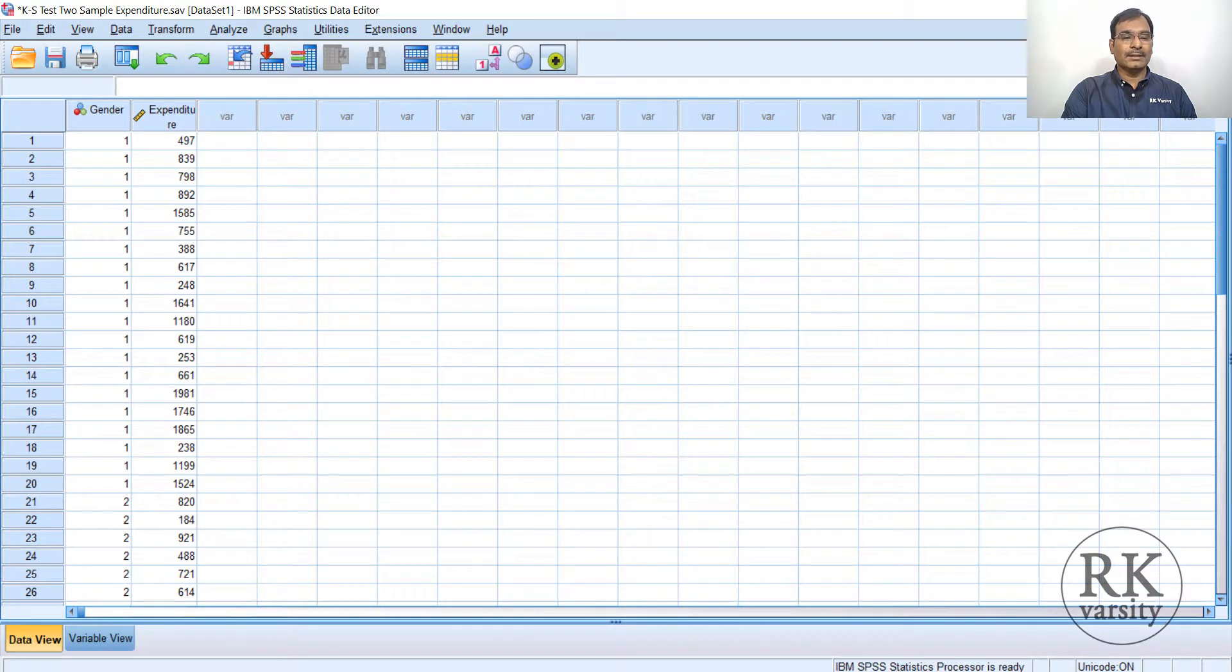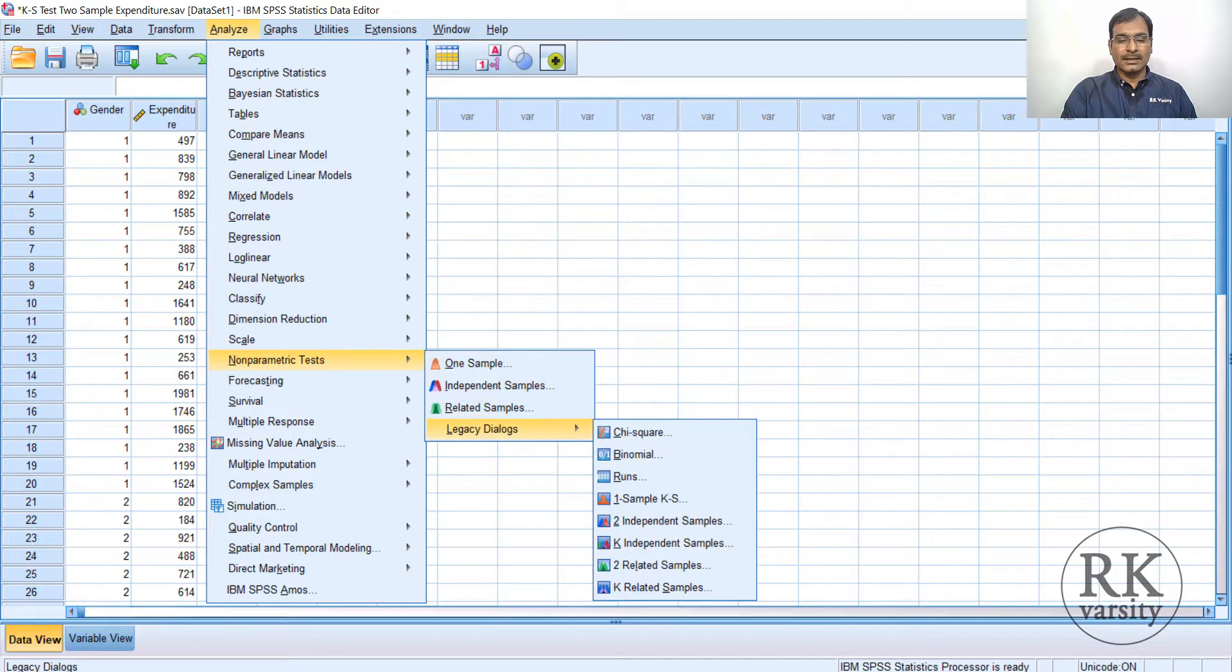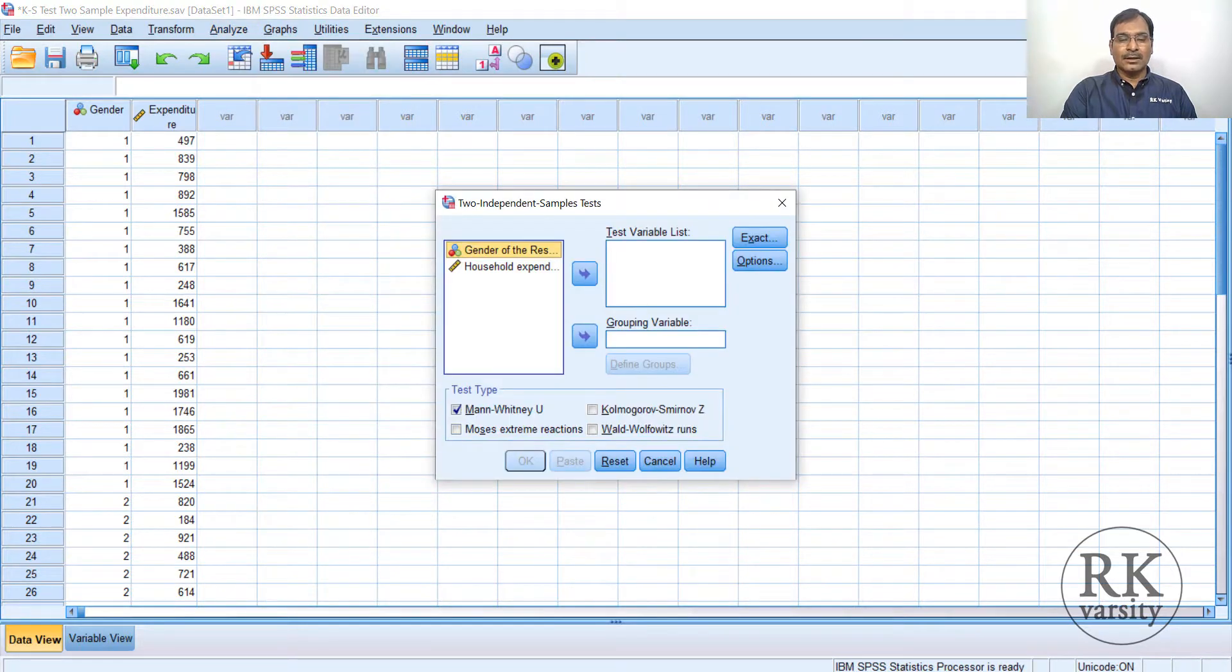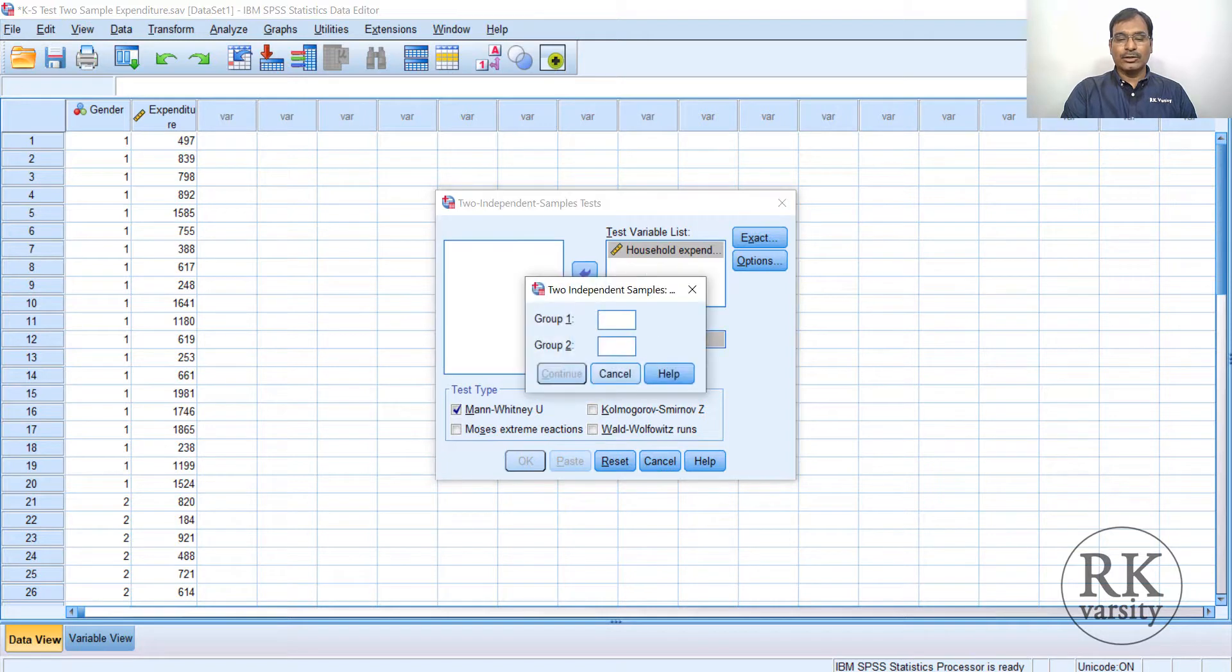To calculate the Kolmogorov-Smirnov test for two independent samples, go to the menu command. Click on Analyze, then go to Non-Parametric Tests, Legacy Dialogues, then Two Independent Samples. Your household expenditure is the test variable. Gender is the grouping variable. You need to define the grouping. Groups we have given values as one and two, so group one is one and group two is two. Click Continue.